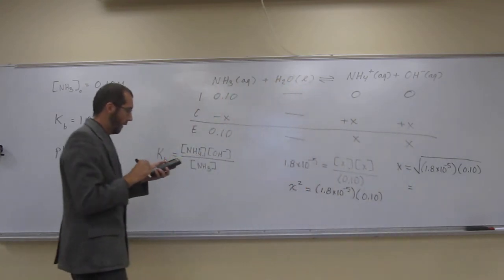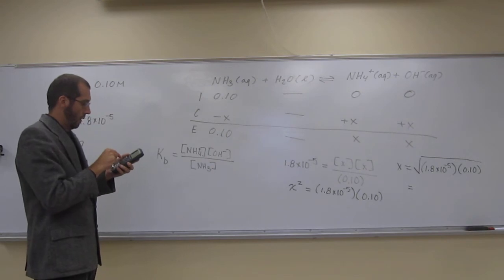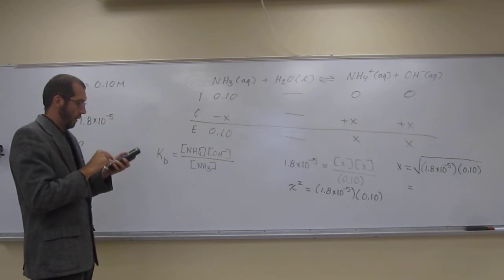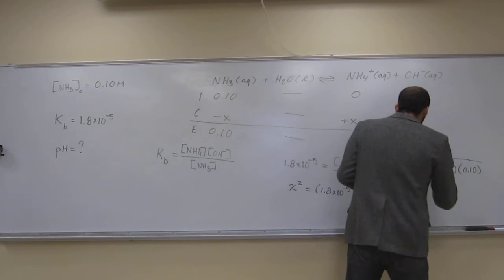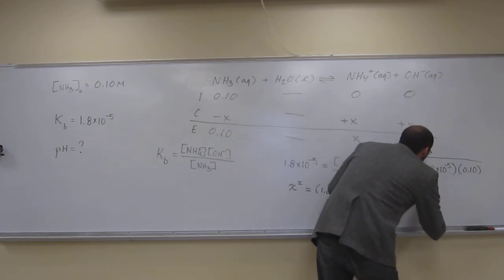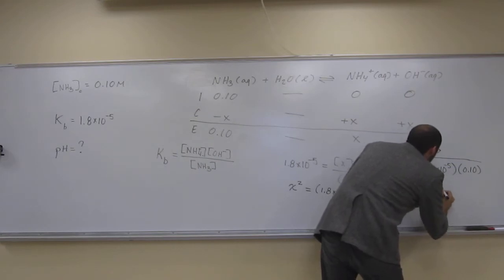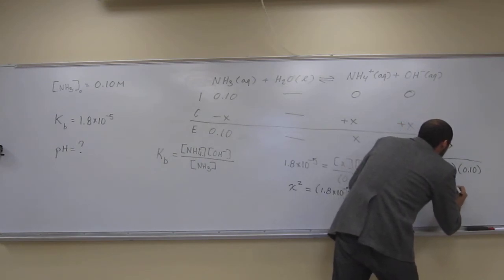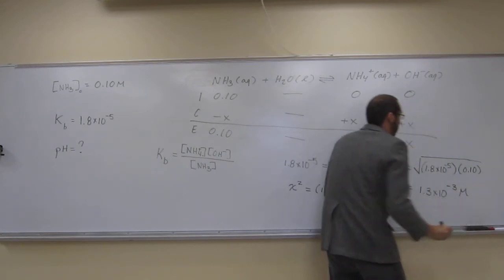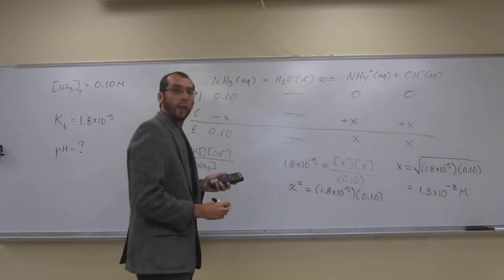So that means that X equals the square root of 1.8 times 10 to the negative 5 times 0.10. Let's just do that together. So the concentration of X is going to be 1.3 times 10 to the negative 3 molar.